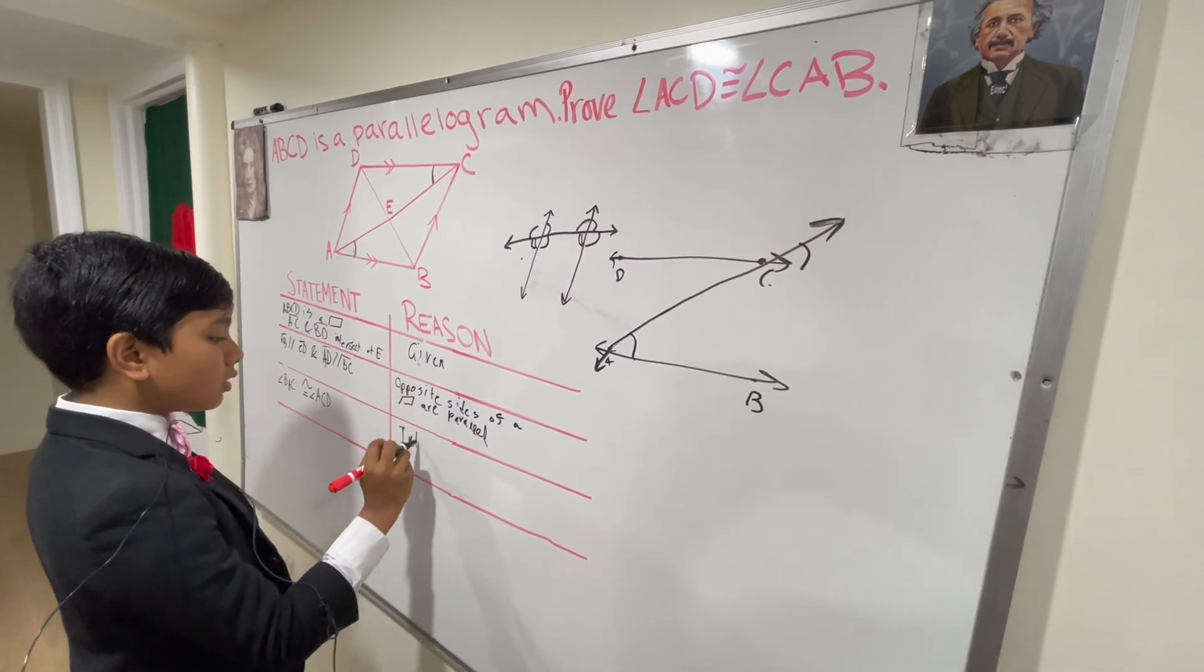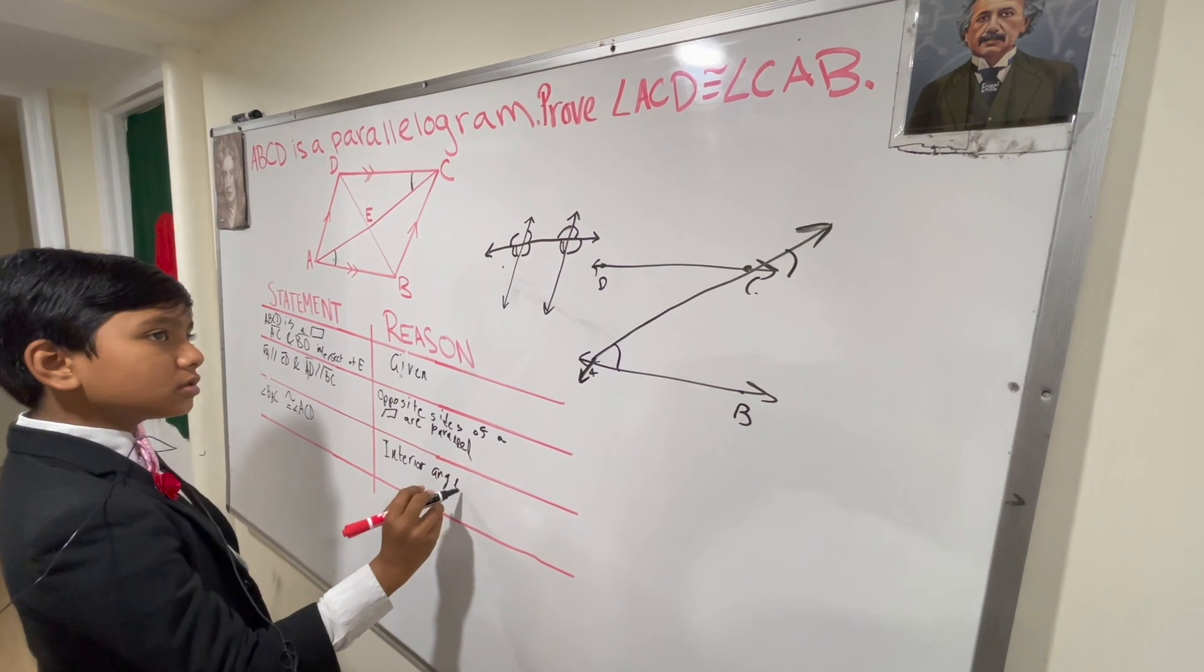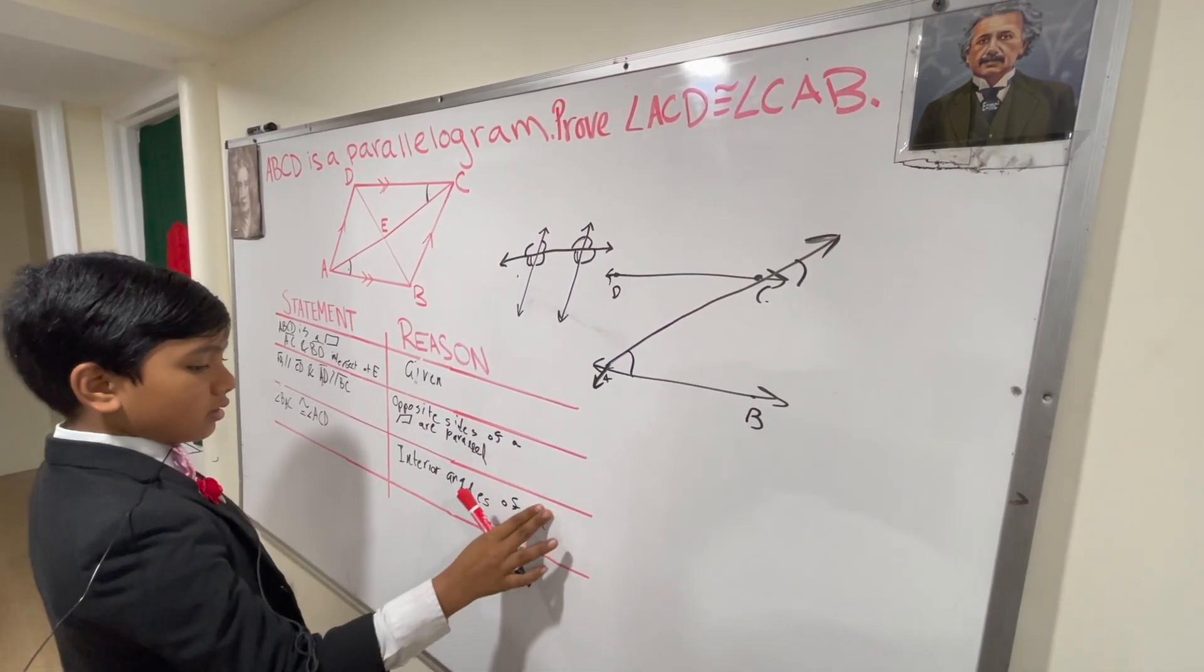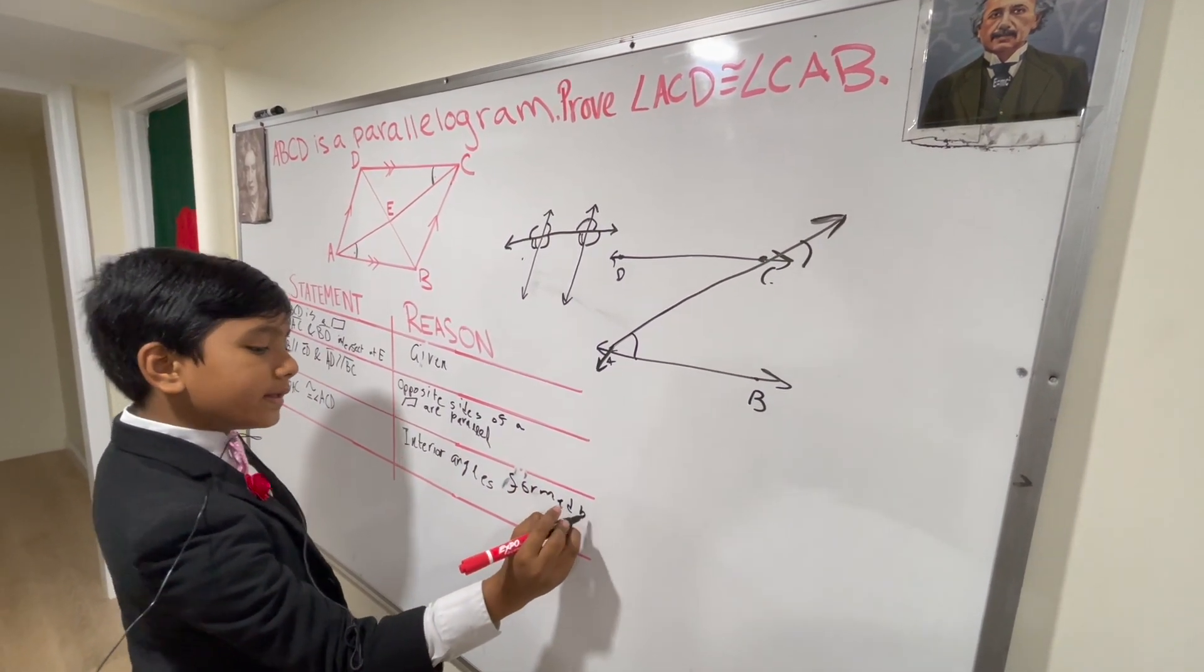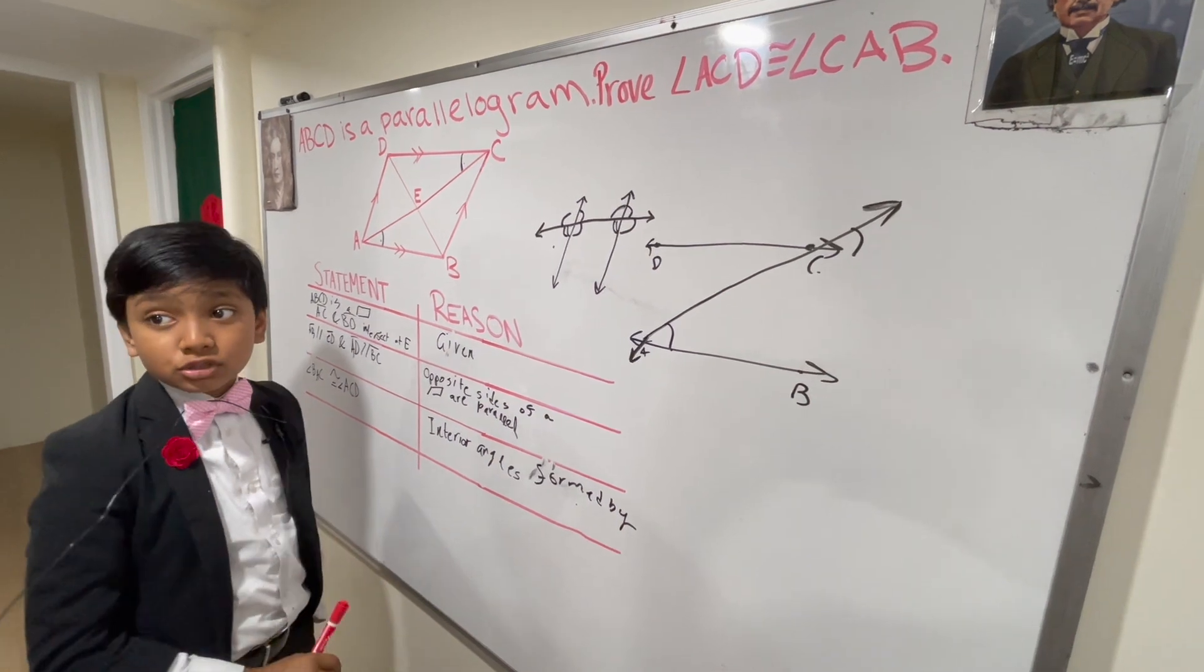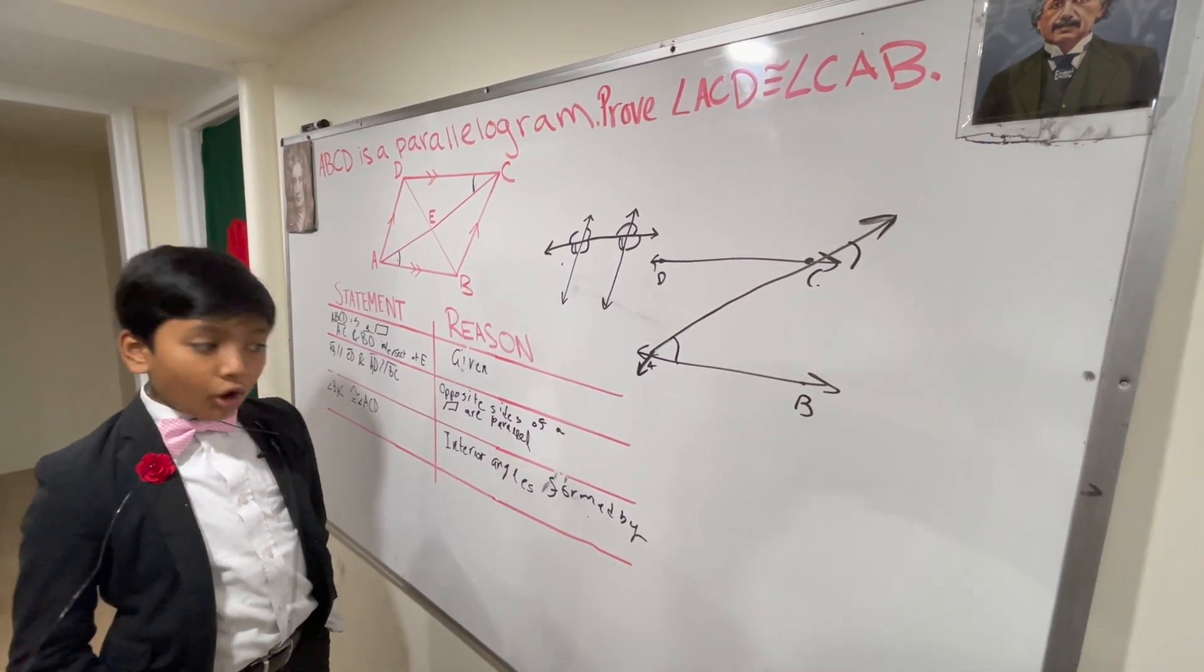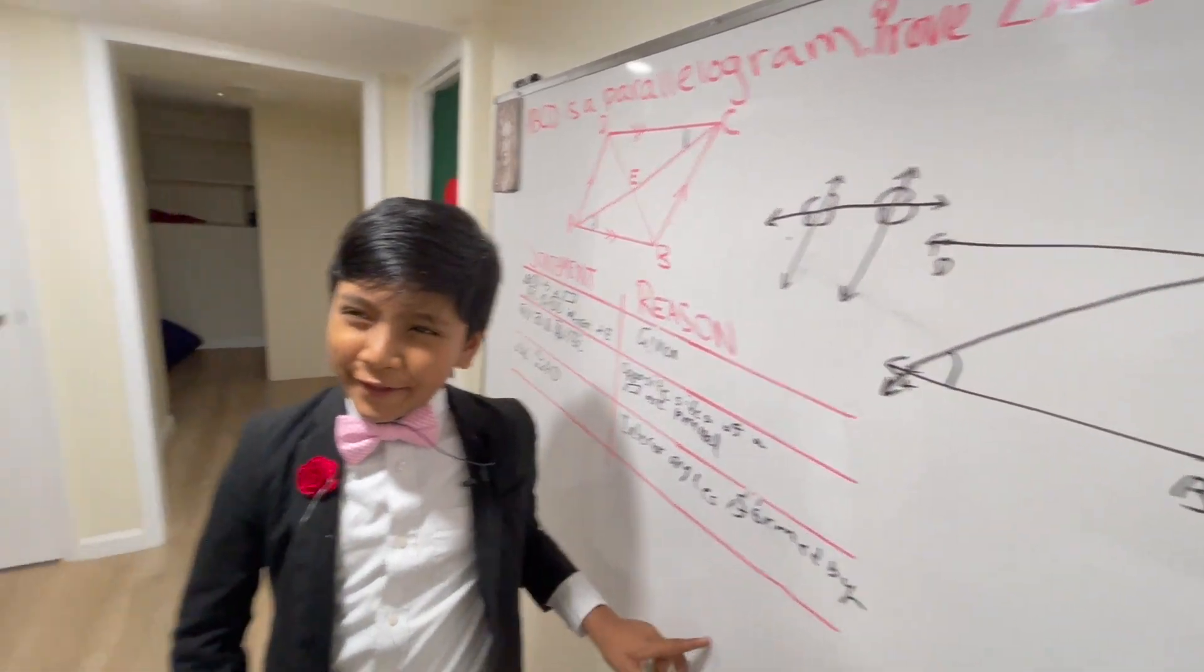All right, so now that means that angle BAC is congruent to angle ACD. And that's because interior angles formed by a transversal intersecting two parallel lines will always be equivalent. All right, I'm too lazy to put that over here.